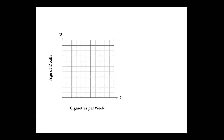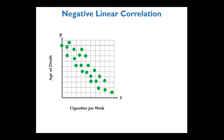For example, a scatter plot of cigarettes smoked per week versus age of death might look like a line trending downward. That would have a negative linear correlation. A negative linear correlation is described as: as X increases, Y tends to decrease. So as cigarettes per week increases, age of death decreases.